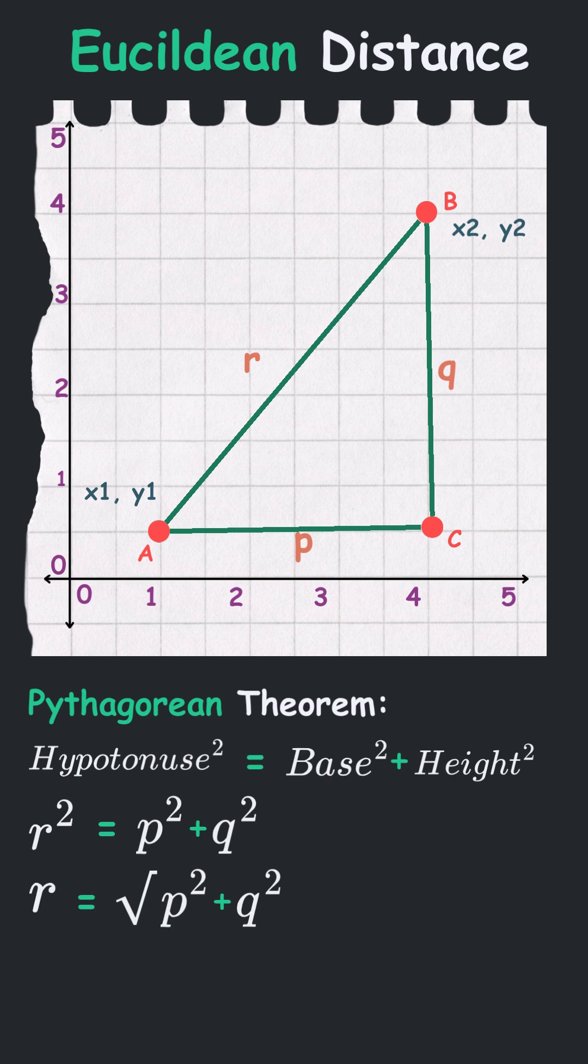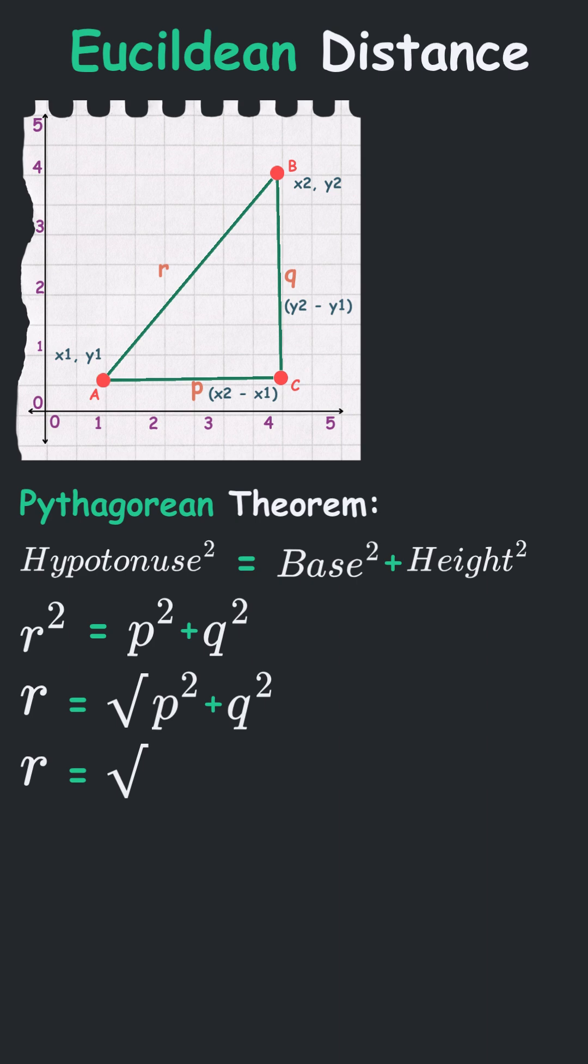Now, the horizontal distance p is the difference in their x-coordinates, which is equal to x2 minus x1. And the vertical distance q is the difference in their y-coordinates, and that is equal to y2 minus y1. So let's go ahead and substitute these values into the equation above.